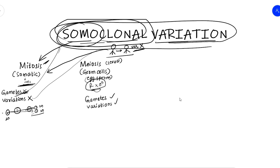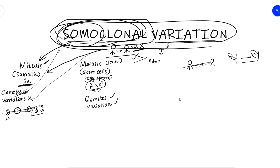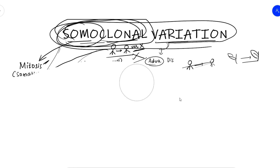The variation is the difference seen in the leaves. Somaclonal variation is when variation occurs, even if it was not expected. This has both advantages and disadvantages. If you have clarity on this definition, we will find it very useful.